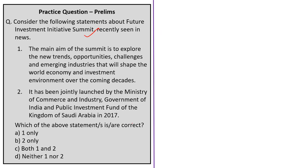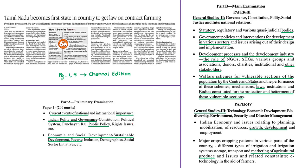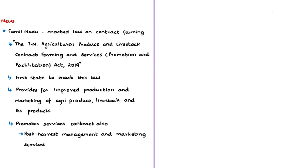The next news article is based on contract farming and legislations. The syllabus that can be linked to this discussion is given for reference. The state of Tamil Nadu has enacted a law on contract farming, and the President of India has given his assent to it. We will discuss why this law is required and its important provisions.